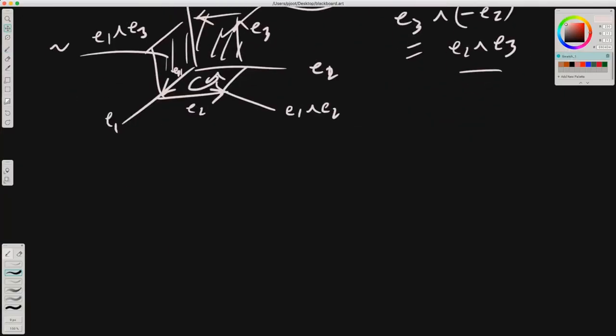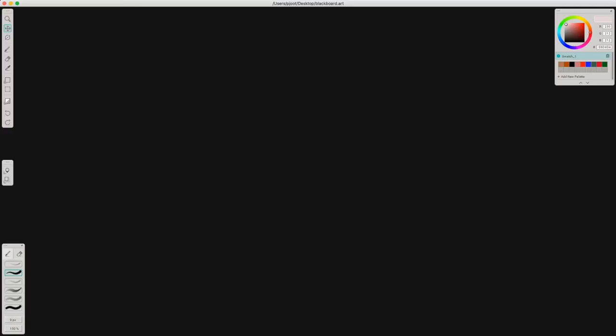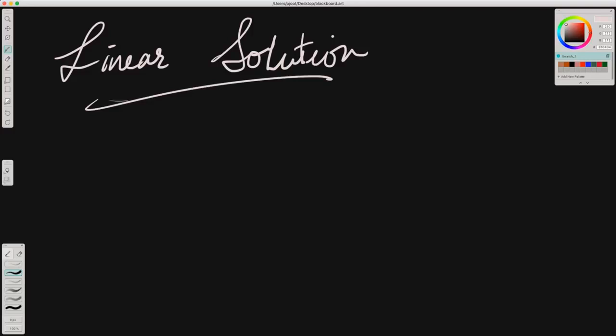So now that we have this new operator, how do we use it? Let's see how we can apply the wedge product to solving a linear system. As an equation, whatever we do to one side we have to do to the other. Let's say we wedge both sides with B or wedge both sides with A.